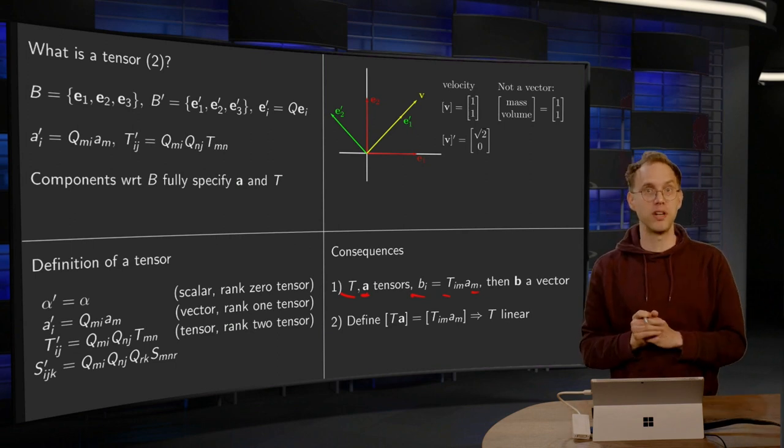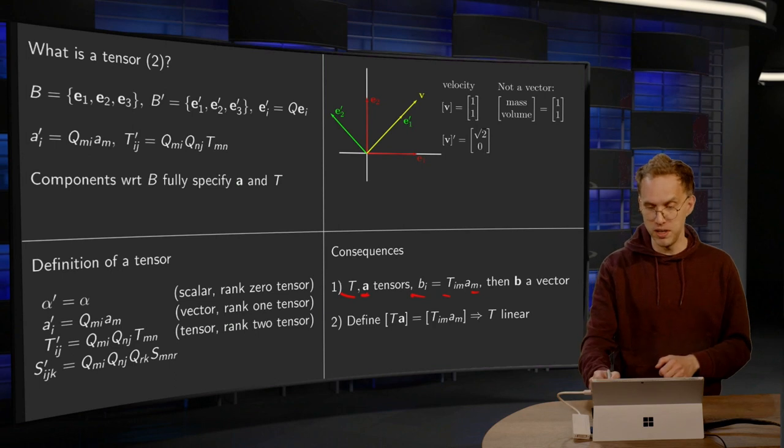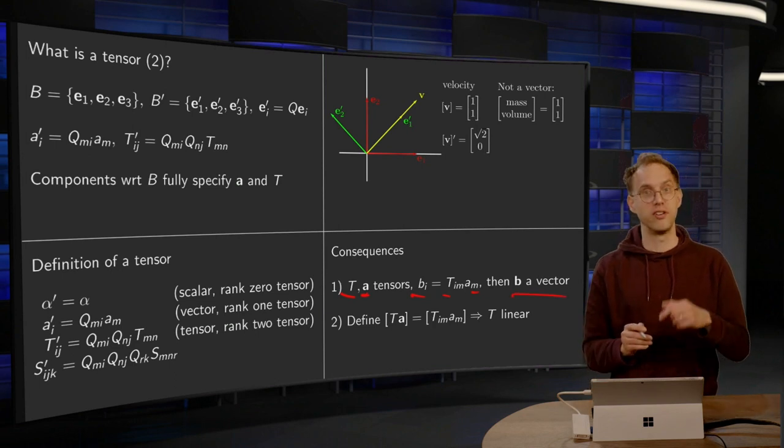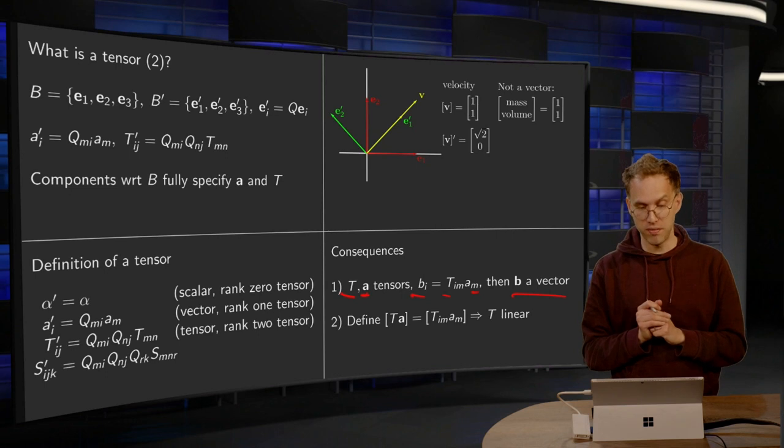So we can compute our bi. Our next video will show that this b is, in fact, a vector. So defining your b equals T times a indeed gives you a vector.